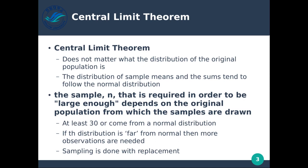If the original population already has data that is normally distributed, we don't have to worry as much about having a large number of samples, since we're essentially going from one normal distribution to another. But if our data is not normally distributed, we need at least 30 samples. The further away from normal the distribution is, the more samples we're going to require.